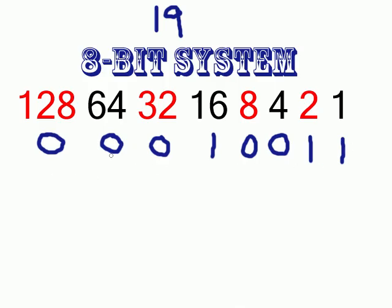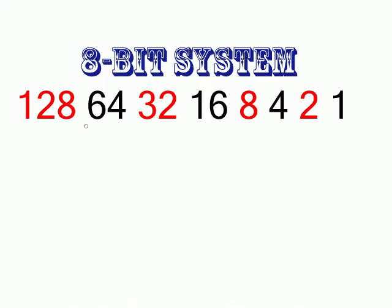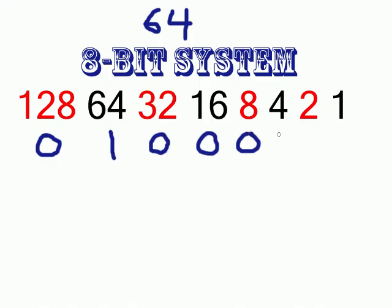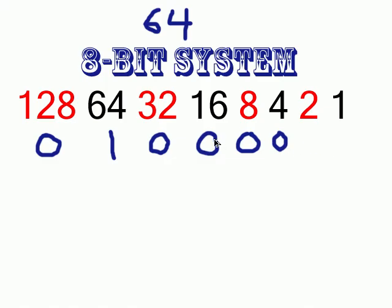Let's do another one — say you want the number 64. Can 128 go into 64? Nope. Can 64 go into 64? Yes. Since we already have it, we fill in all the rest as zeros. So the binary code for 64 in an 8-bit system — remember, 8-bit means eight numbers — is 0-1-0-0-0-0-0-0. By using this system we can get any number from 0 to 128.